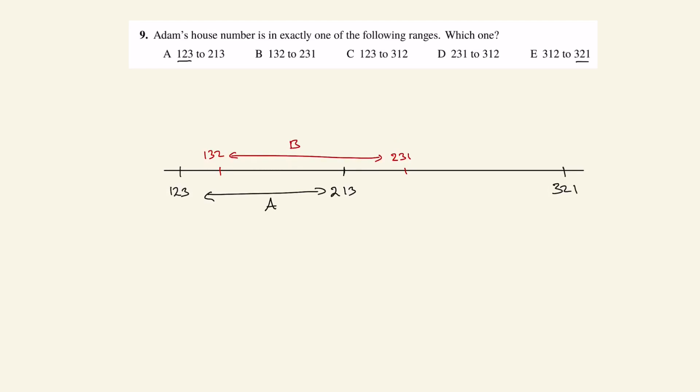C would run from 123 to 312. So 312 would be over here somewhere. So C would be all of this distance.